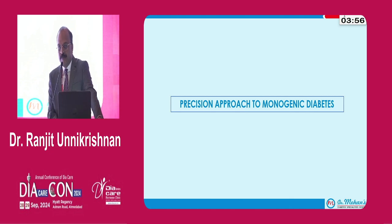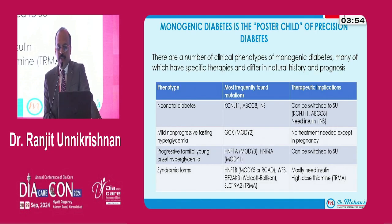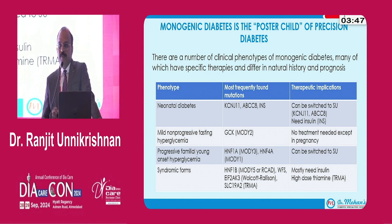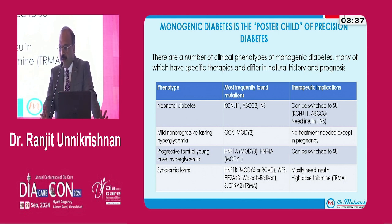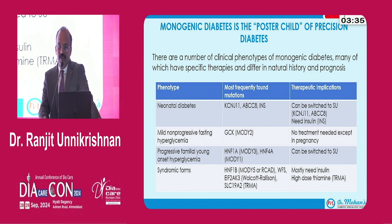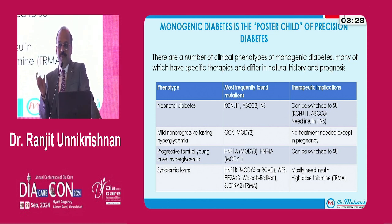Finally, I will talk briefly about monogenic diabetes, which is considered the poster child of precision diabetes. There are many clinical phenotypes of monogenic diabetes, and making an accurate diagnosis may make a world of difference to the patient. The first phenotype is neonatal diabetes — diabetes with onset below the age of six months or one year — and most have mutations in genes encoding the units of the ATP-sensitive potassium channel.